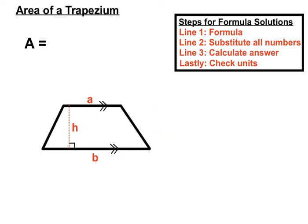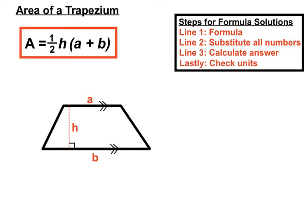And here it is. Area equals a half of the height multiplied by a bracket in which we're adding a and b together. So a half height times a plus b. A half h times a plus b, with the a plus b in brackets. So that's our formula for the area of a trapezium.